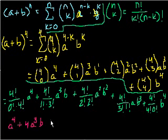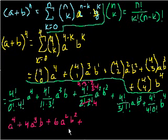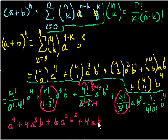4a cubed b, plus 4 factorial, that's 4 times 3 times 2 times 1, so that's 24. Over, what's 2 factorial? That's just 2. So 2 times 2 is 4, so 24 divided by 4 is 6, so 6a squared b squared, plus, well, this term is the same as this term. Just the 1 factorial and 3 factorial got switched around, and you might want to think about that for a few seconds as to why that is. It should make a little sense to you. But that is, so it's going to be 4ab cubed, and it makes sense, right?